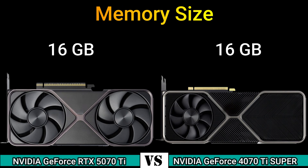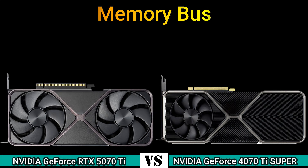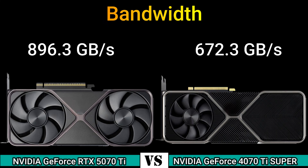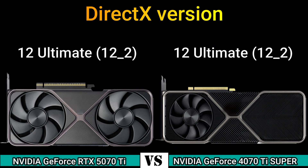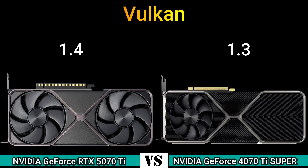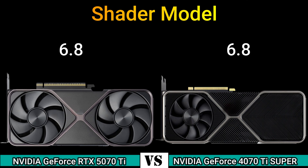Memory size: 16 GB. Memory type: GDDR7 and GDDR6X. Memory bus: 256-bit. Bandwidth: 896.3 GB/s and 672.3 GB/s. DirectX 12 Ultimate (12.2), OpenGL 4.6, OpenCL 3.0, Vulkan 1.4 and 1.3, CUDA 10.1 and 8.9, Shader Model 6.8.